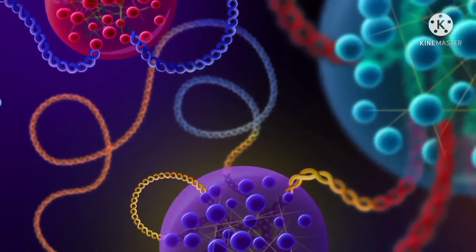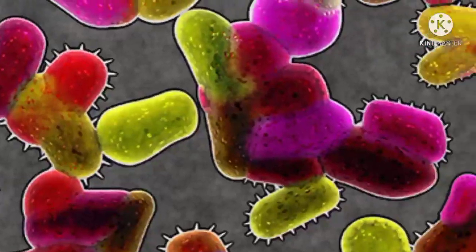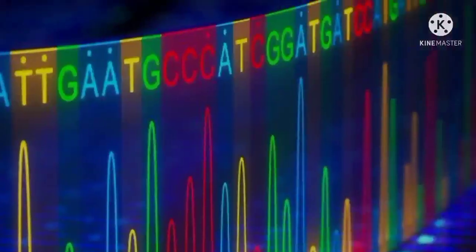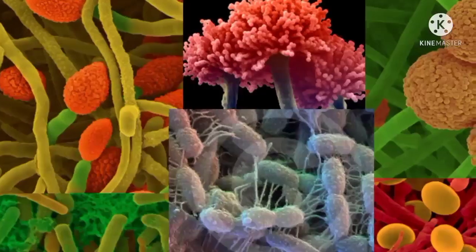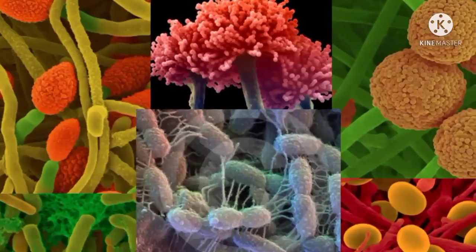Metagenomics is the genomic analysis of microbial communities by direct extraction and sequencing or cloning of their DNA that allows studying communities of organisms directly in their natural environment.